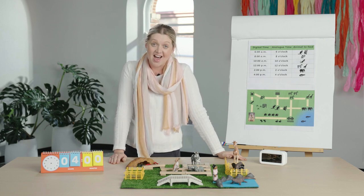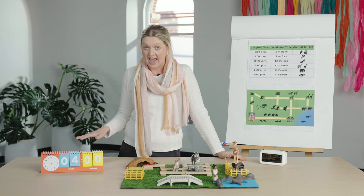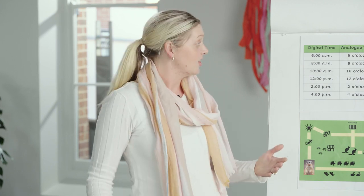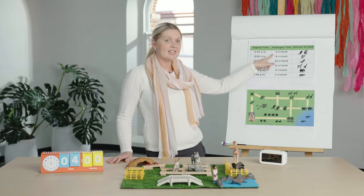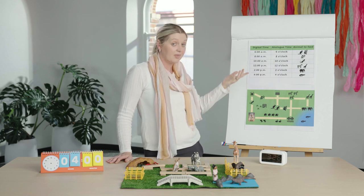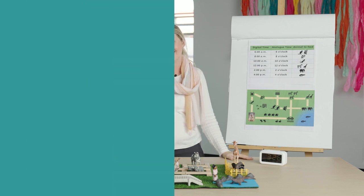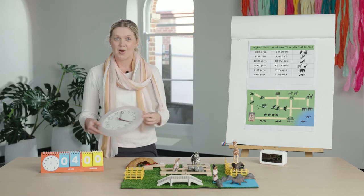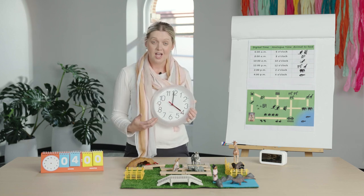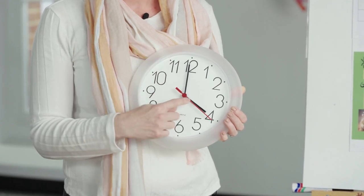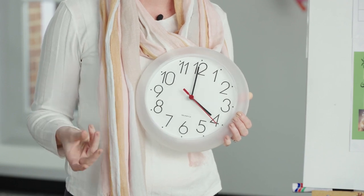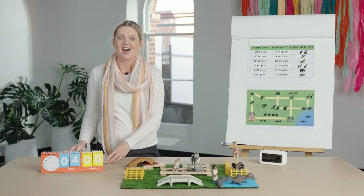I think Ollie really understands how to read o'clock times on analogue and digital clocks. Your home task is to make your own schedule using o'clock times — you might like to do a schedule for animals at the zoo and pretend that you're the zookeeper, using analogue time or digital time, or you might like to record both. In this lesson we practised reading o'clock times to follow a schedule. Remember: on an analogue clock, the minute hand is on the twelve and the hour hand is pointing to the numeral that tells us the hour. Thanks for joining me, everybody — I'll see you next time.